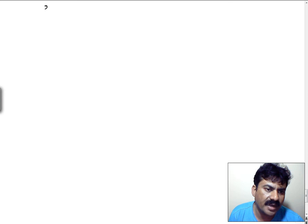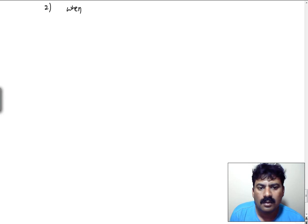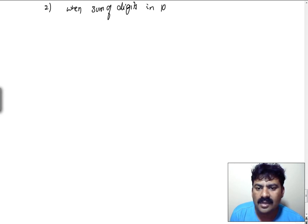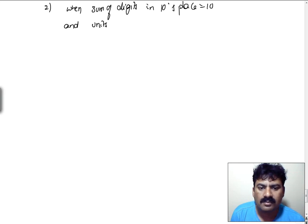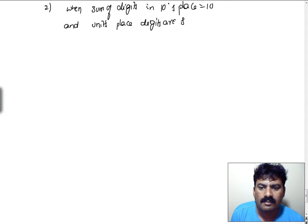The second special condition is: when the sum of digits in the tens place is equal to 10, and the units place digits are the same, then we can do a simple calculation.